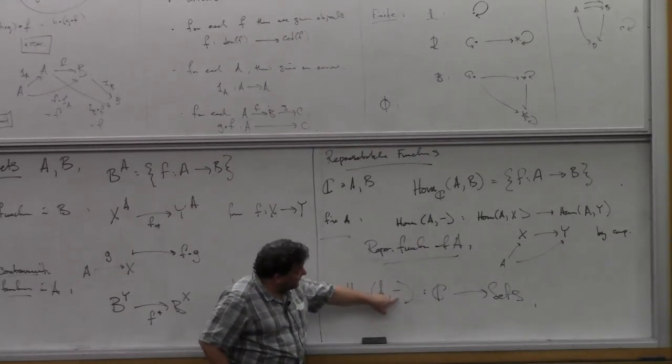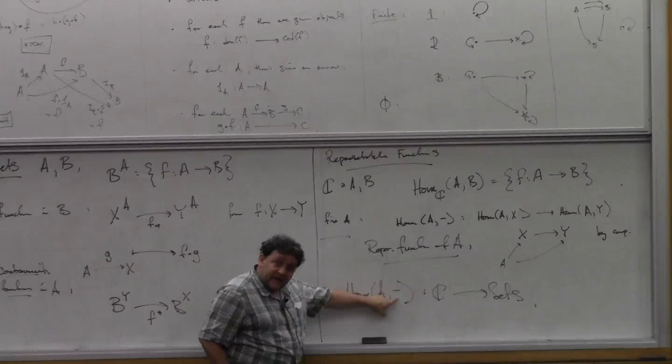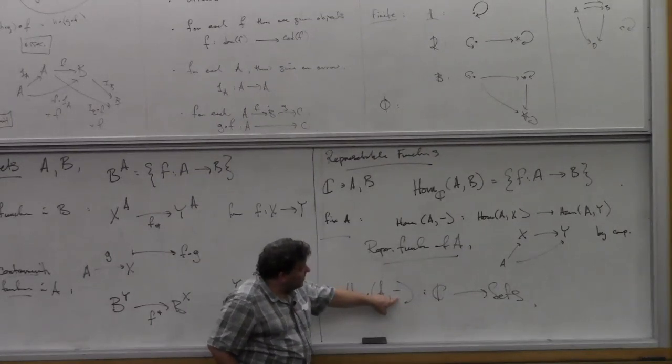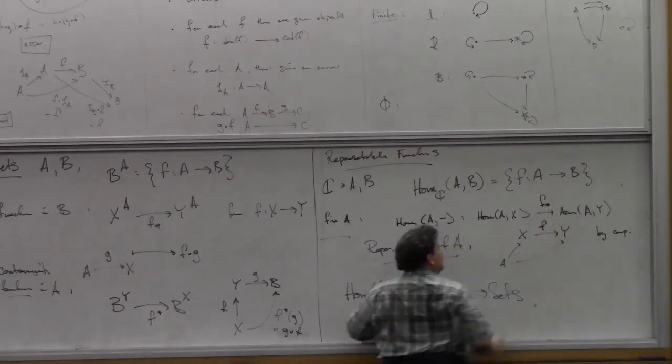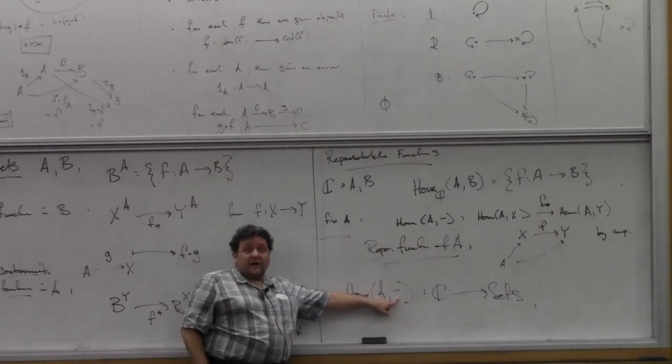It takes an object X to the set of all arrows from A to X, and it takes an arrow F to the function given by composition.